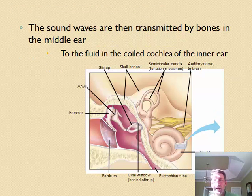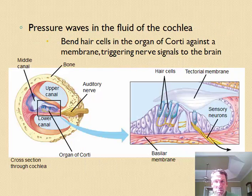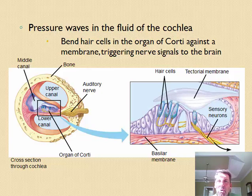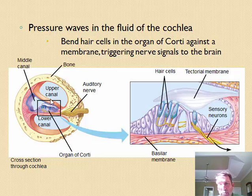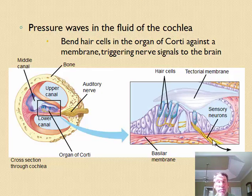In the inner ear — and here we go to a slide of the inner ear — we have what's called the cochlea. The cochlea is the coiled tube, and inside the coiled tube of the cochlea is the organ of Corti. In the organ of Corti we have hair endings that are attached to the auditory nerve, which basically transmits information to the brain. There's fluid inside the cochlea.